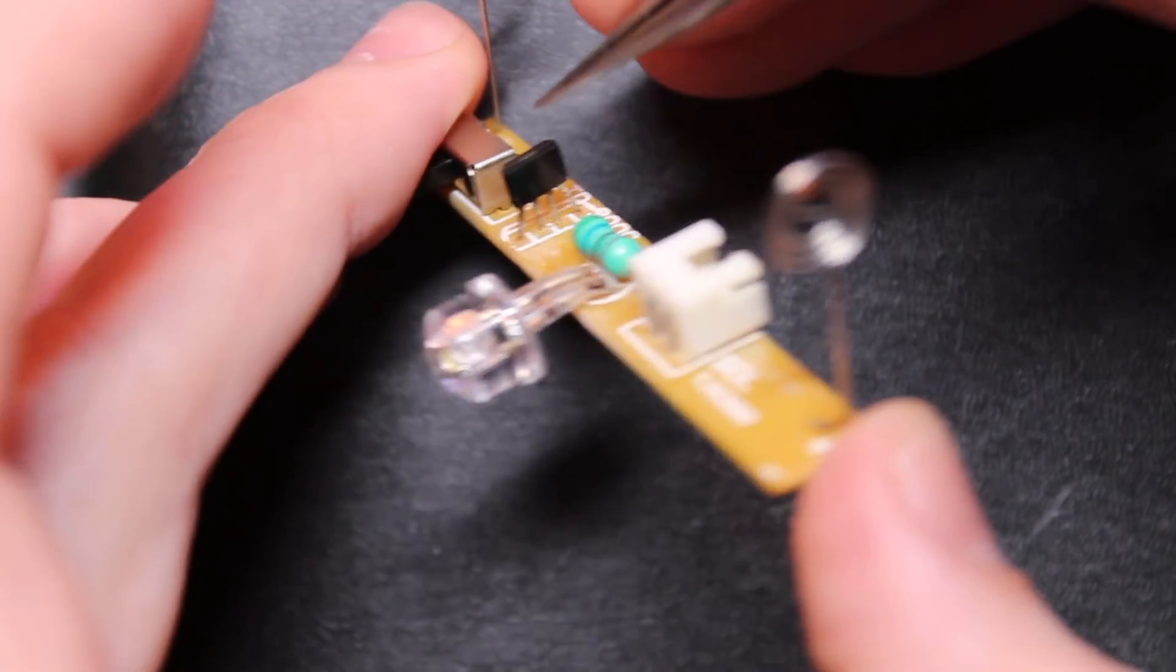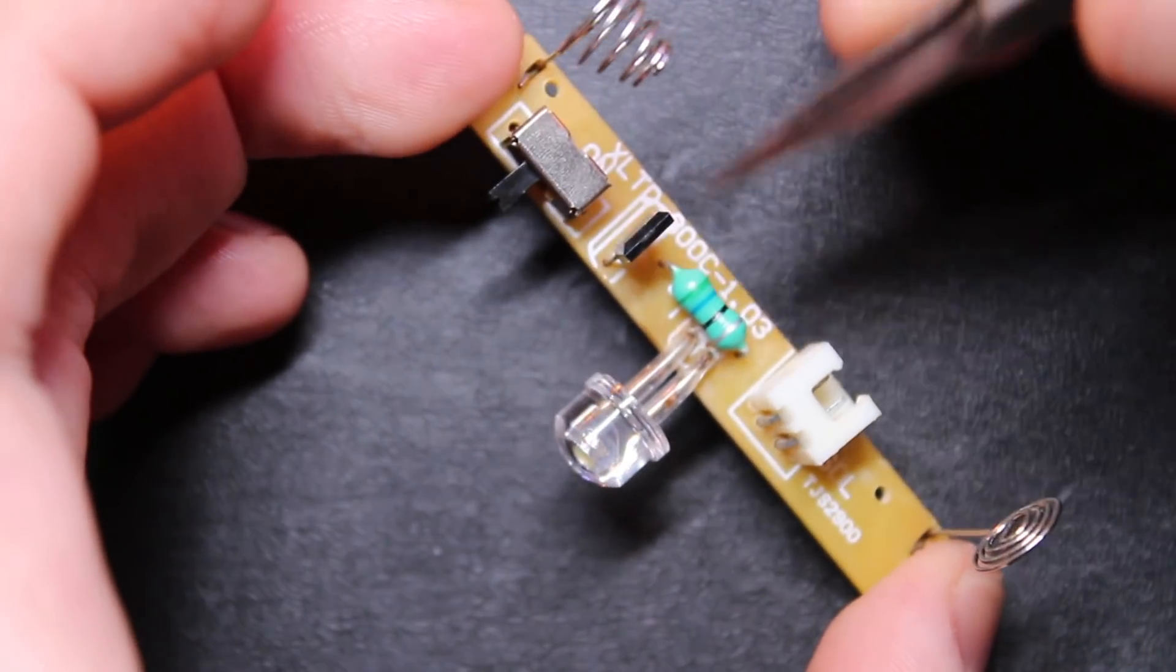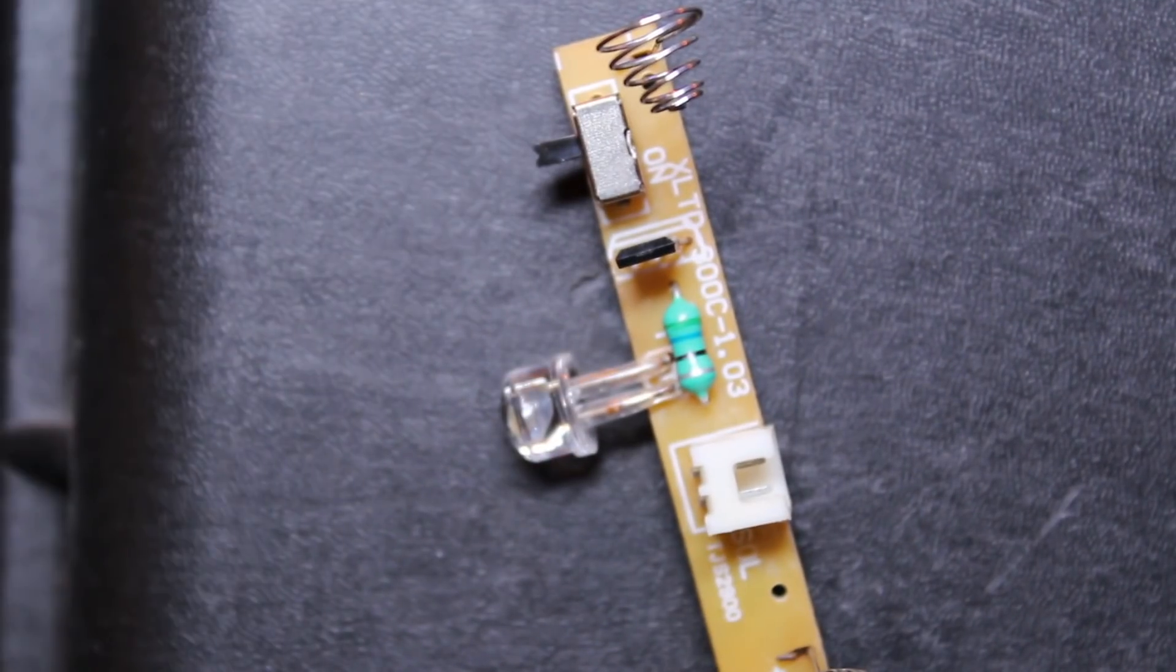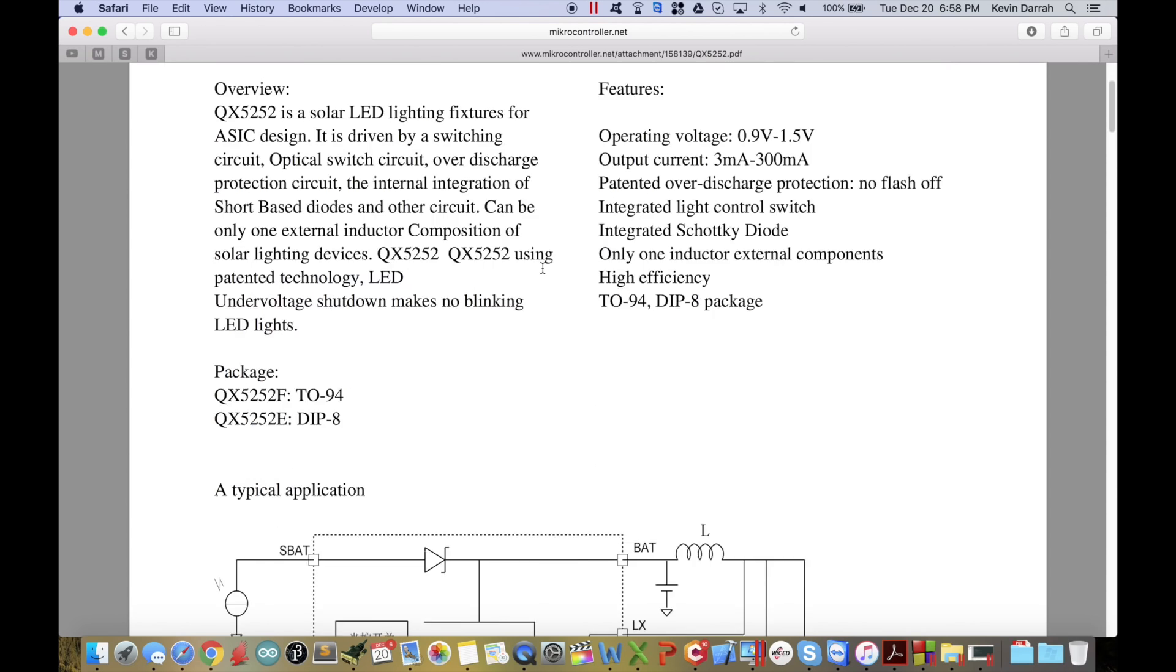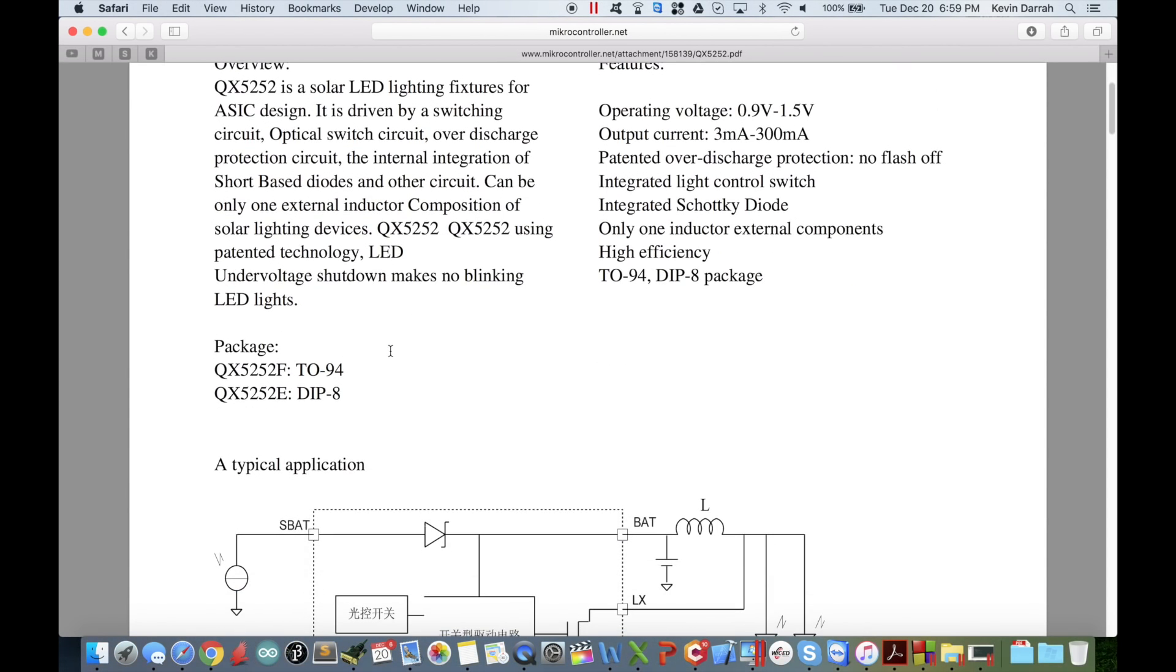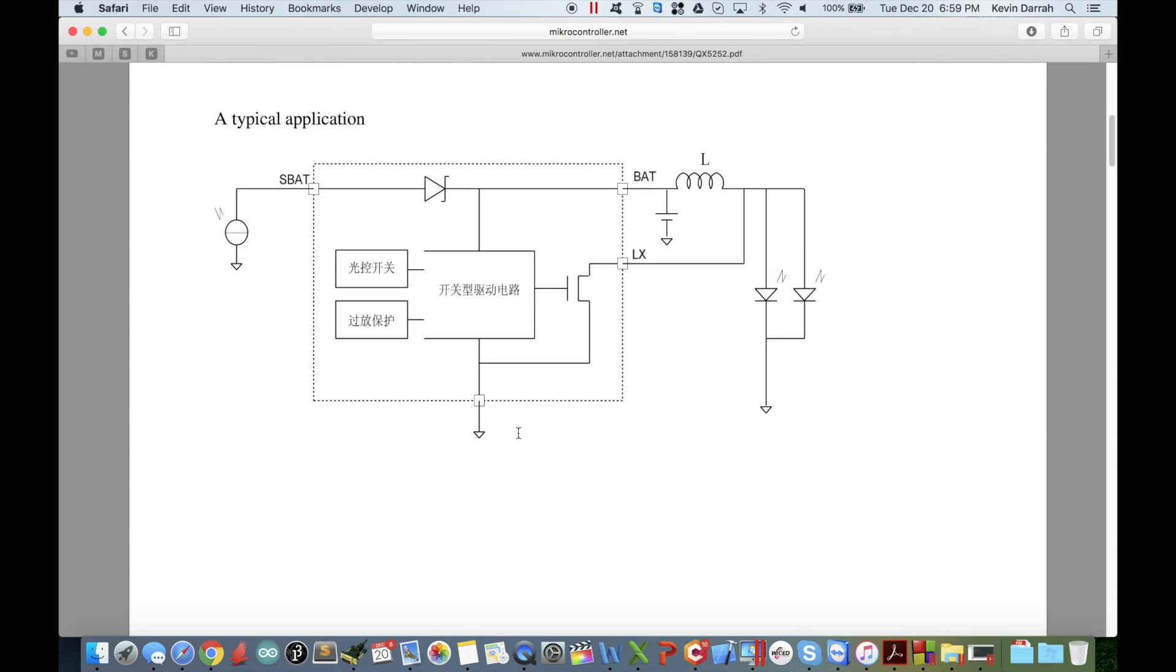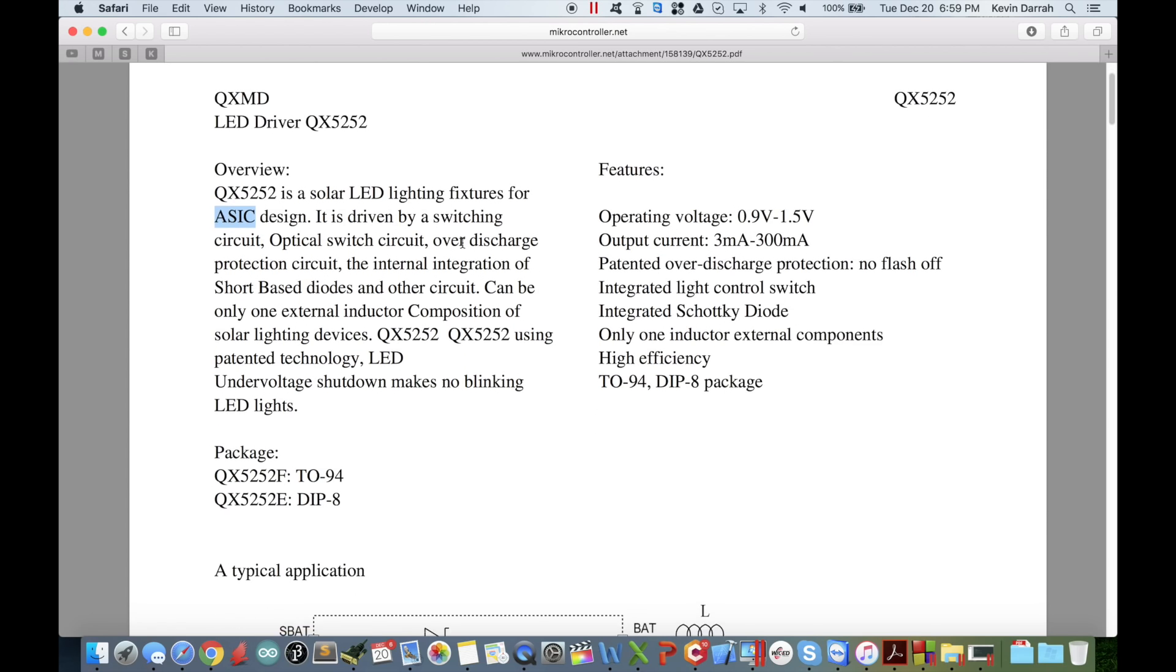The first thing I'm going to do is pull up - let's see what we can find for this custom part here. It's a four pin TO-92 style package there, so let's go ahead and throw that into Google and see what we can find. Okay, so I did a little bit of googling and I found a datasheet for this part. I wasn't really expecting to find much. I put in QX5252 and I found this datasheet. It's not the exact part number but this is definitely the part because we've got a custom ASIC here in that TO-92 package. It's a solar LED lighting fixture ASIC designed specifically for this application.